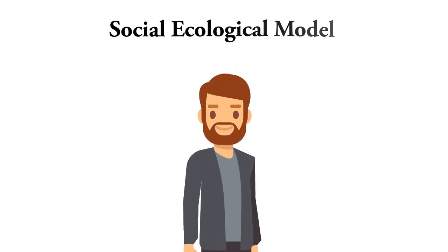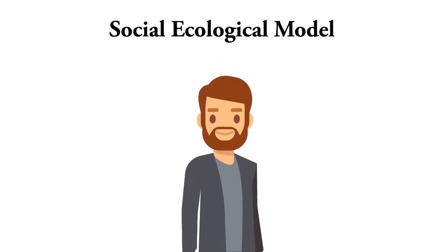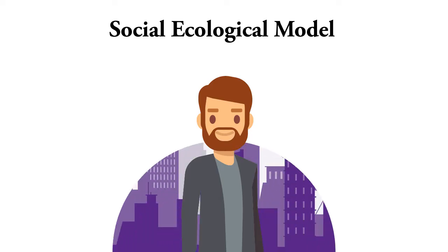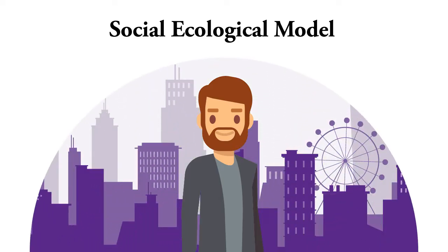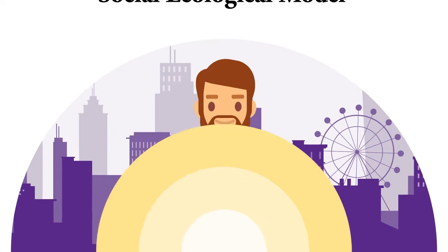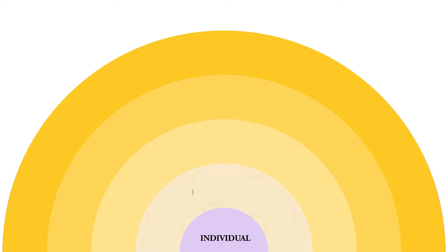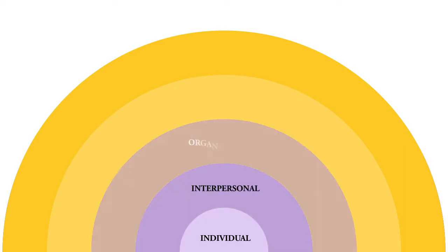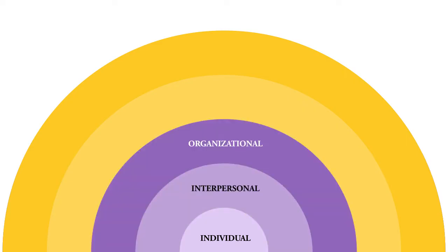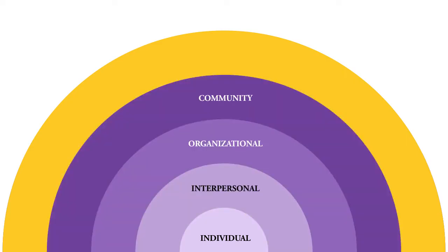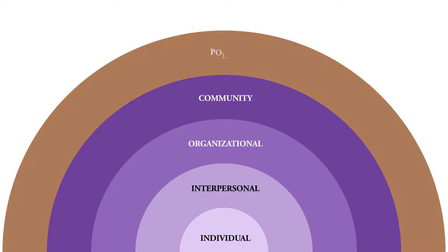The Social Ecological Model focuses on individuals and their interactions with larger social systems that influence health outcomes. The five levels of influence in the Social Ecological Model include intrapersonal factors, interpersonal processes, institutional factors, community factors, and public policies.